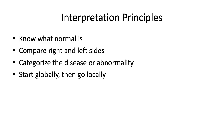Some interpretation principles: we have to know what normal is. We have to have a mental image of normal anatomy. You need to know what normal looks like to be able to pick up on what is abnormal. We can compare the right and left sides, particularly for panoramic x-ray. The principle of symmetry is important because humans are naturally symmetric to some degree, so we can take advantage of that to observe the right and left sides and compare them.